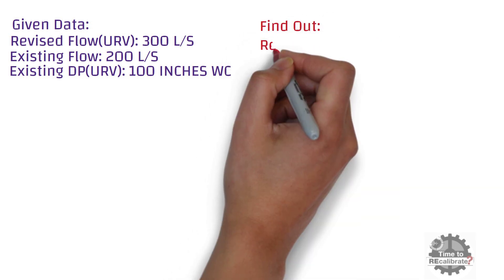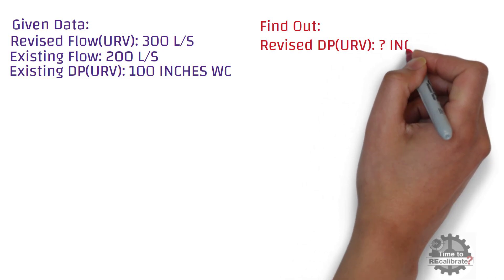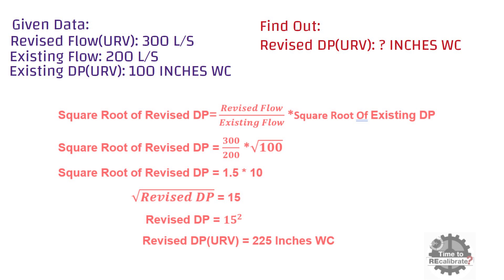From these given data, we need to calculate the revised upper range value of differential pressure — in other words, the new upper range value of differential pressure for the new flow range. Now, put all given values into this standard calculation formula and do the simple math calculation. You will get 225 inches water column of differential pressure.